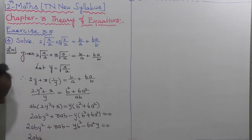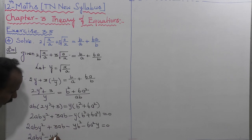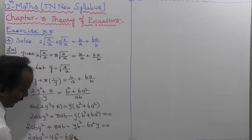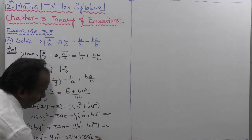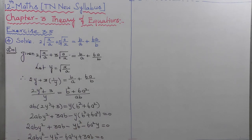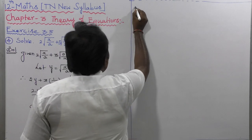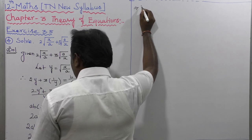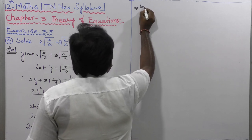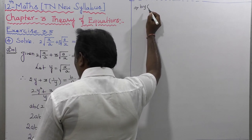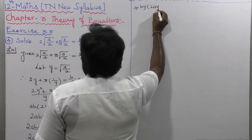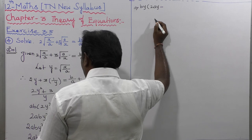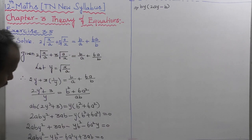Rearranging: 2ABY squared minus YB squared minus 6A squared Y plus 3AB equals 0. For the first two terms, the common values: 2 is not common; A is not common; B is common; Y is common. So taking BY as common from first two terms, remaining values are 2AY minus B.